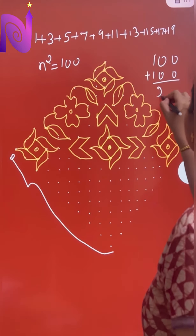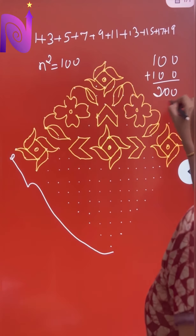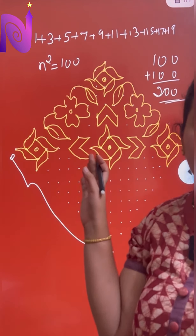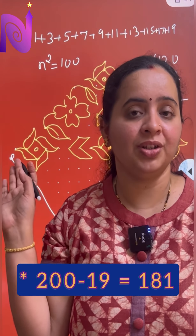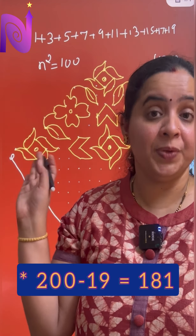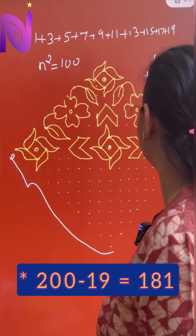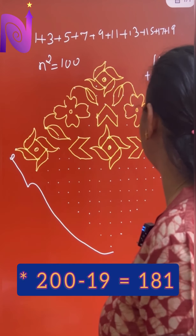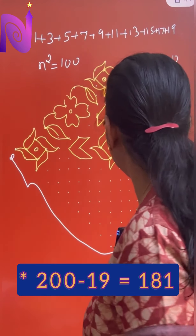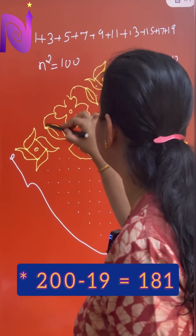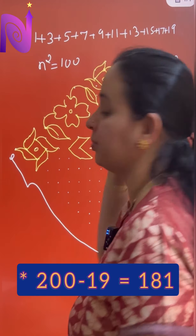But we need to calculate the above part also. So if I just add 100, that gives you 200. Does that give you the exact number of dots in the given Rangoli? No. We need to subtract 19 from it. Why? Because we have 19 only in one line — after that it is 17, 15, and so on.